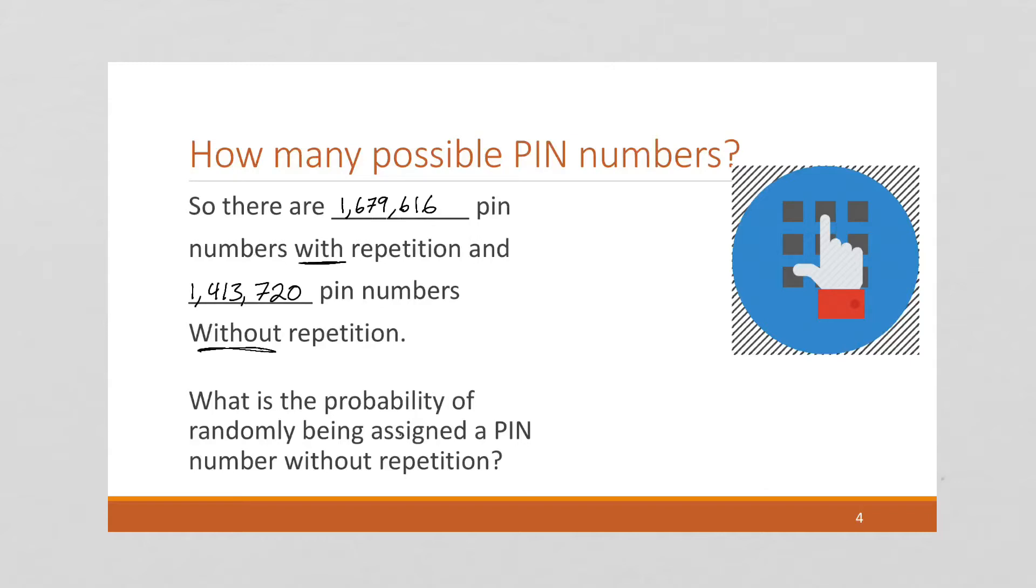So we want to know what is the probability of randomly being assigned a pin number without repetition. Well, this we can go back and use our equally likely probability formula. So we have an event space, E, and a sample space, S, and the event space, E, is the probability of randomly being assigned a pin number without repetition. That's going to be 1,413,720 out of all possible pin numbers, that means those that include repetition, it's going to be 1,679,616.